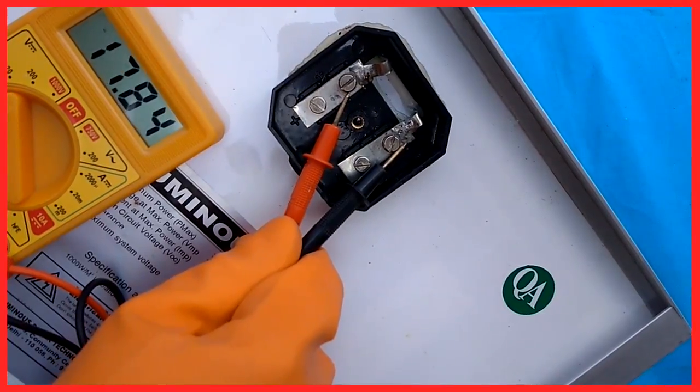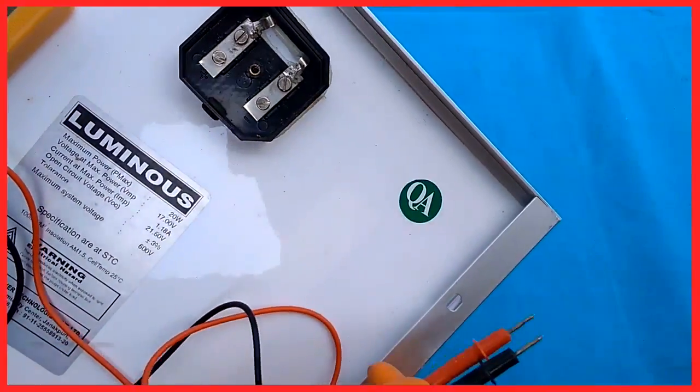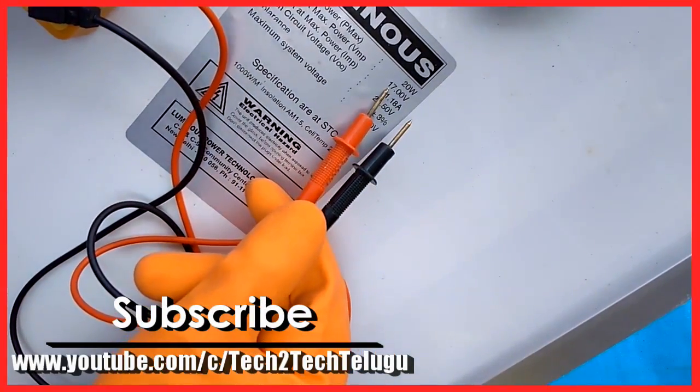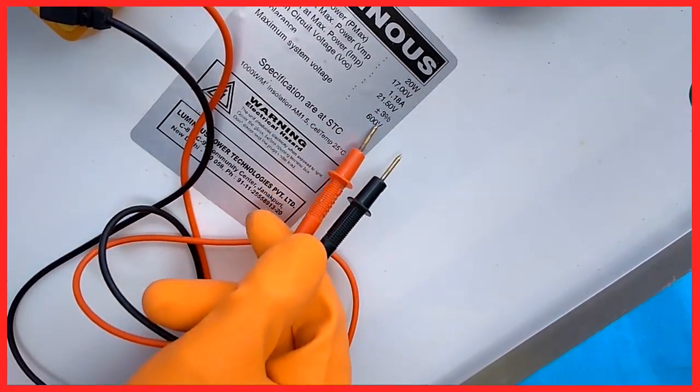Now the negative black probe connects to the port labeled COM. The red positive probe connects to the port usually labeled V. Then simply touch the multimeter probes to the solar panel leads, matching their corresponding polarity, red to red, black to black.